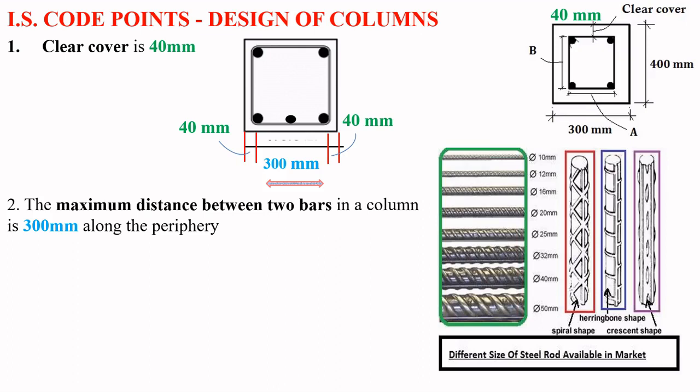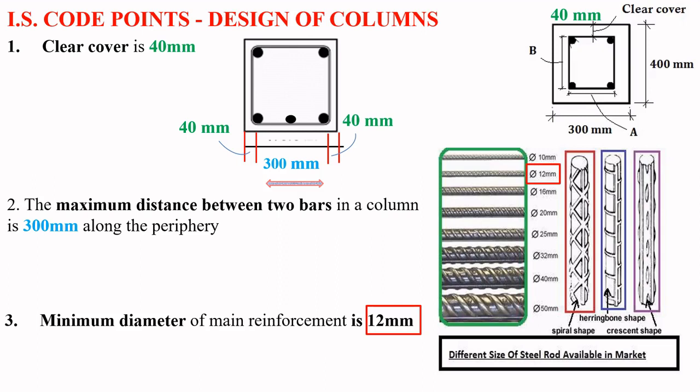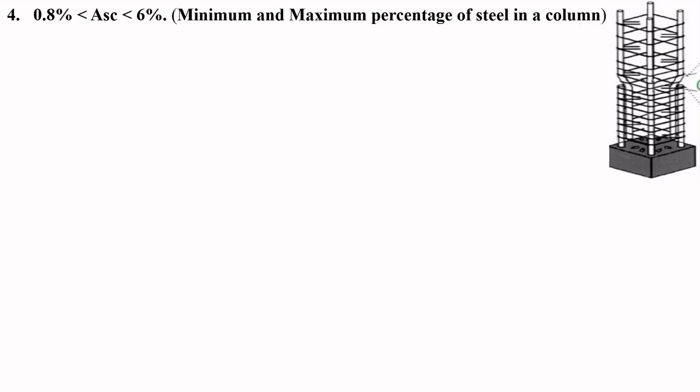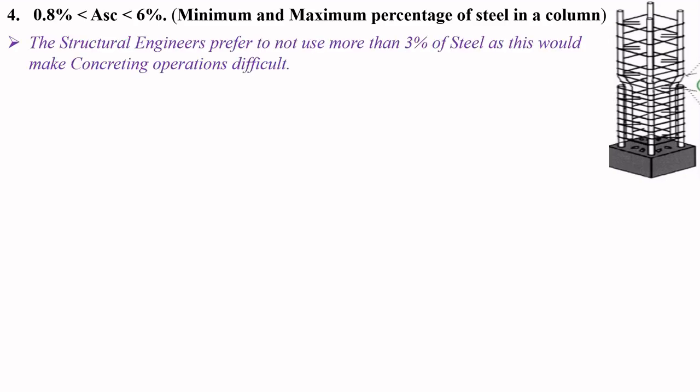As per IS standards, the minimum diameter of the main reinforcement should be 12 mm — you cannot use 10 mm for the longitudinal reinforcement of a column. Moving to the next IS code point: the minimum percentage of steel in a column is 0.8% and the maximum is 6%. However, in practice, structural engineers prefer to limit the maximum steel percentage to 3% to ensure the concrete can flow comfortably without difficulty during casting.